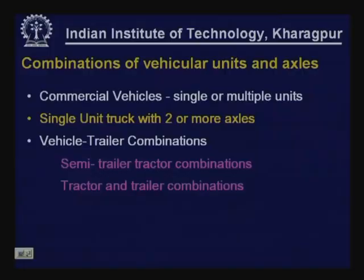Commercial vehicles can come in single or multiple units. We classify them as single-unit trucks with two or more axles, semi-trailer tractor combinations, or tractor-trailer combinations. We will see these combinations in the following slides.